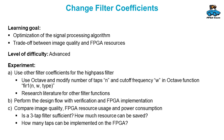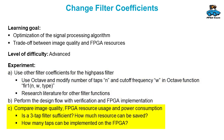If you want to have a look into signal processing, you can change the filter coefficients and modify the number of taps or the cutoff frequency in the Octave function. Or you can have a look at the literature to find what other filter functions are proposed there. You can then compare the image quality and the resources that are used.